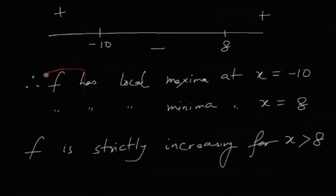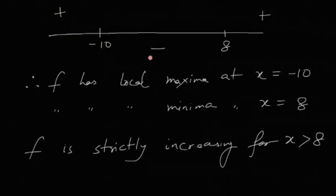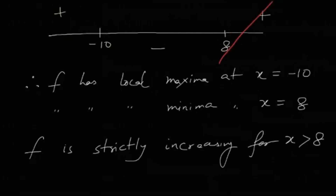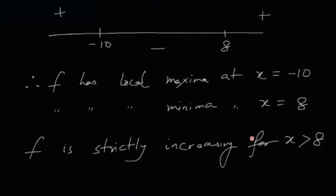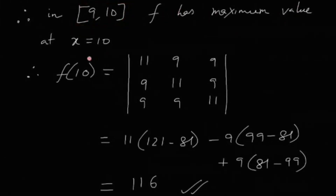Since f'(x) is negative before x = 8 and positive after x = 8, the function f has a local minimum at x = 8 and is strictly increasing for x > 8. Therefore, on the closed interval [9, 10], f is strictly increasing, meaning its maximum value is achieved at x = 10.